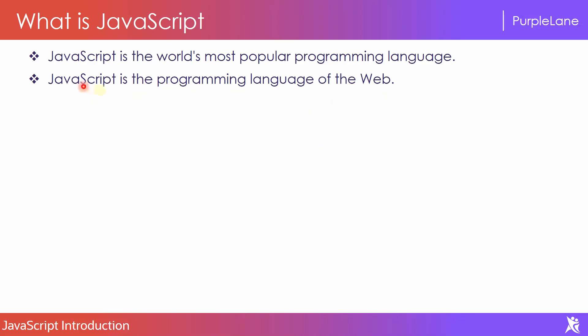The specialty of JavaScript is web development, just like every programming language has its own specialty. For example, C or C++ — the specialty of those two is that we can write programming for devices, so we can do embedded systems. For Python, it is more popular for machine learning. Similarly, JavaScript is more popular for the web.